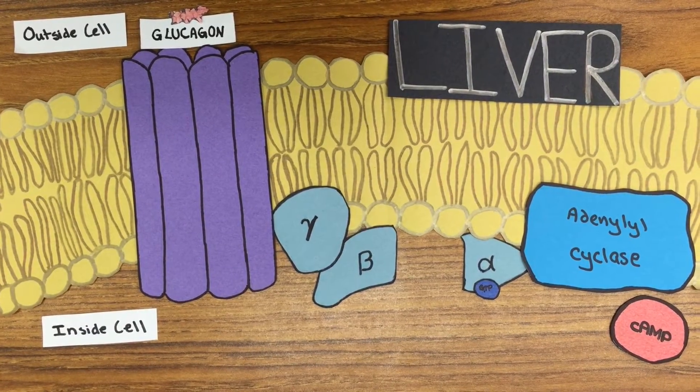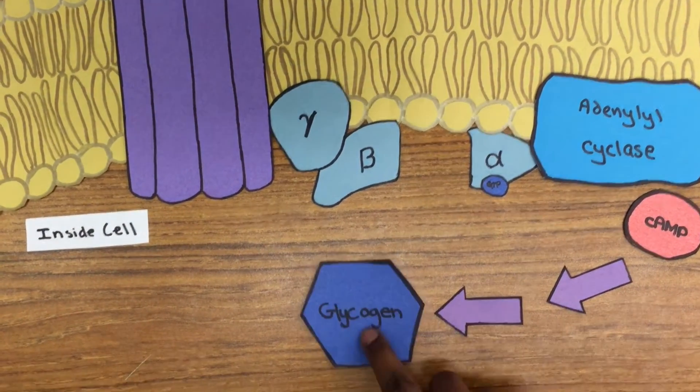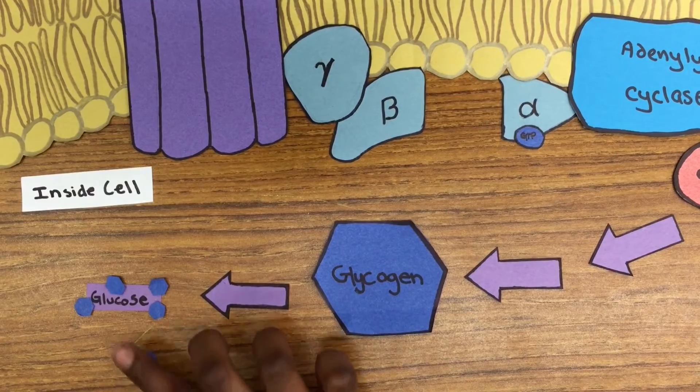Adenylyl cyclase produces cyclic AMP, or cAMP, which then triggers a cascade that results in glycogen being broken down into glucose and transported out of the cell.